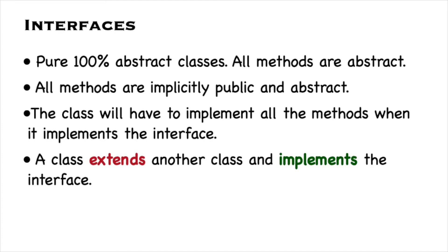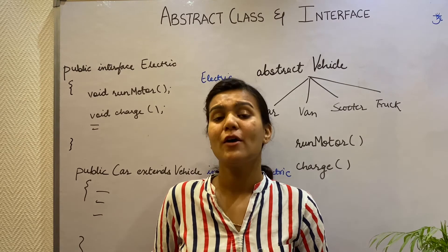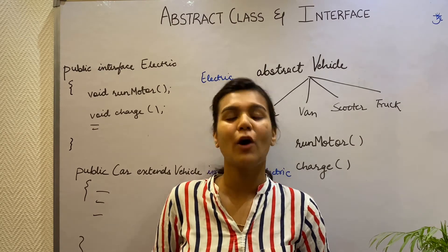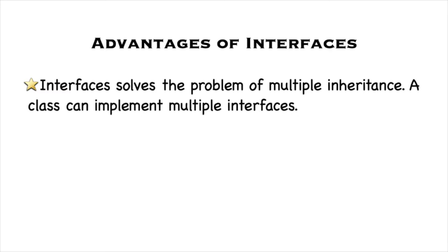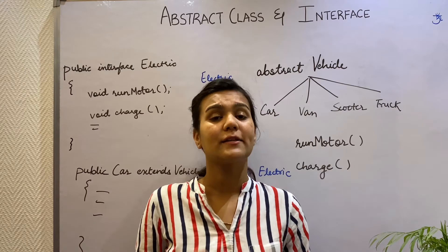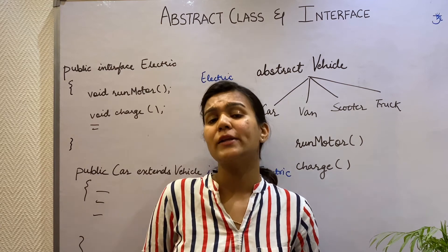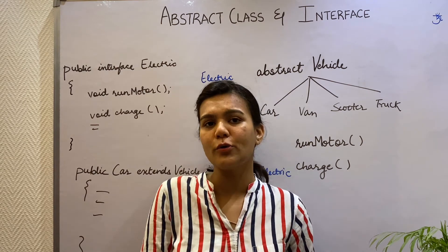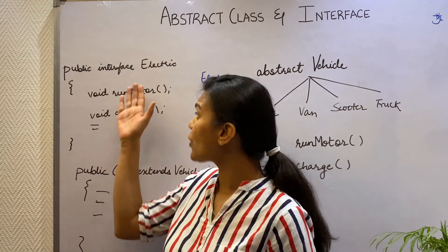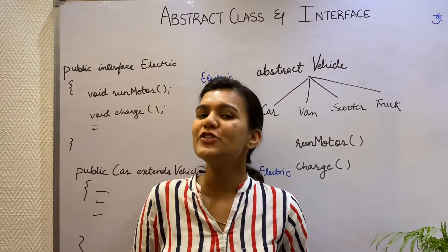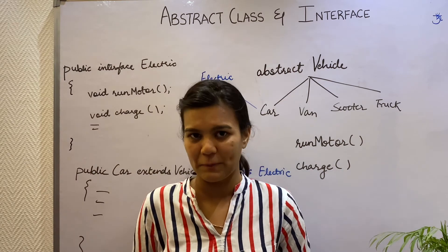Now you must be thinking what are the advantages of having an interface? First of all, it solves the problem of multiple inheritance. So you can implement multiple interfaces without being stuck with the diamond problem. And you remember that the diamond problem was the problem when the child class did not know which inherited version would be called. In interfaces, since you do not have any implementation, the child class will actually have to provide the implementation.